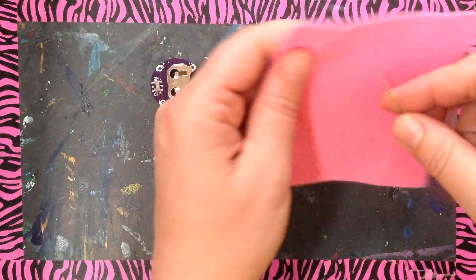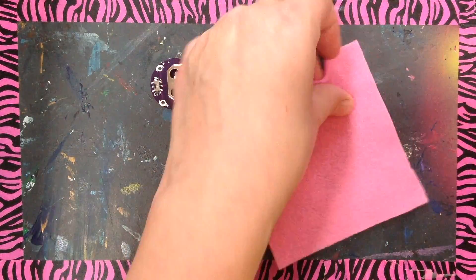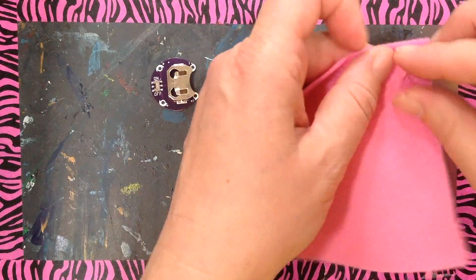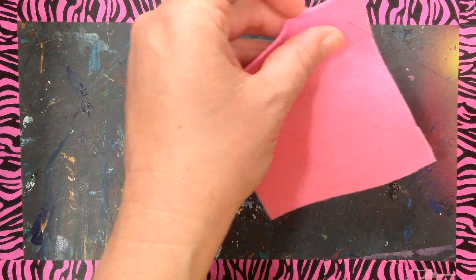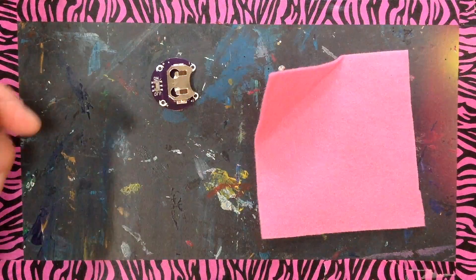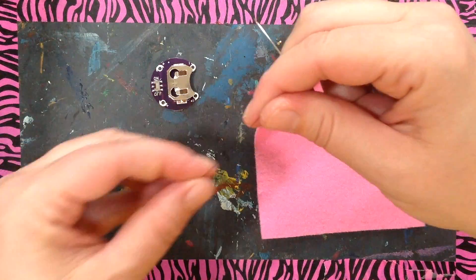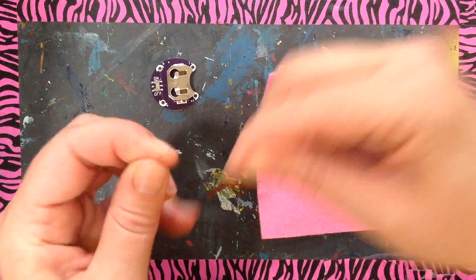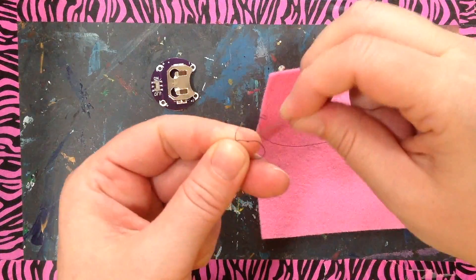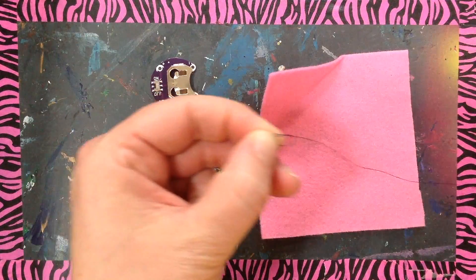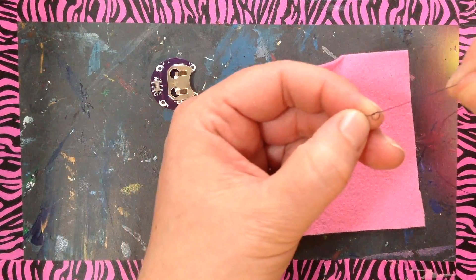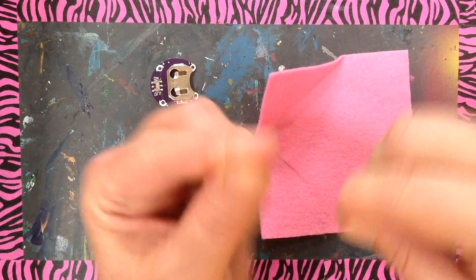So I need to make sure that that knot will stick through my felt and hold, and it won't. It's not big enough. So the needle is probably bigger, sorry the eye of the needle is bigger than the knot.